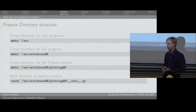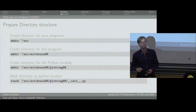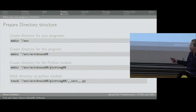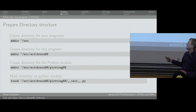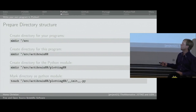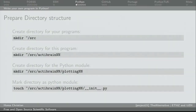For Python to be able to recognize that the directory is indeed meant to be a module, it needs to find a file inside that directory. That file can be empty — it's important that it has the name '__init__.py'. You create that file via the command 'touch', which just touches the file and leaves an empty file as a trace behind. So right now we made a directory for your programs, a directory for this program, a directory for this module, and we signal to Python that that directory is going to be a module.